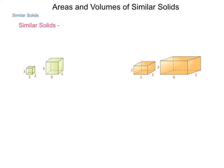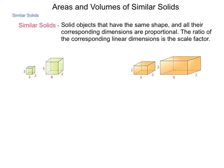The next step in our study of three-dimensional figures when it comes to surface area and volume is to look at areas and volumes of similar solids. Let's begin with the definition. Similar solids are solid objects that have the same shape and all of their corresponding dimensions are proportional. The ratio of the corresponding linear dimensions is called the scale factor.